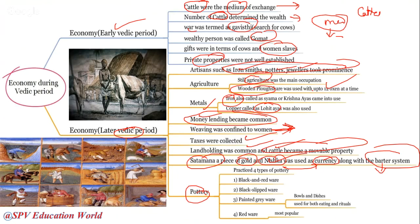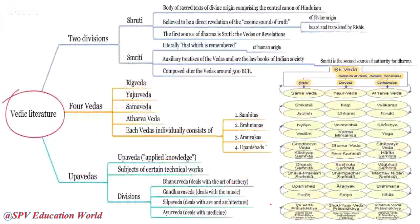Potteries during the Later Vedic period: black and red pottery, black slip ware, and painted grey ware — PGW was most important during the Later Vedic period. They used bowls and dishes for eating and rituals. Red ware was most popular during that period.